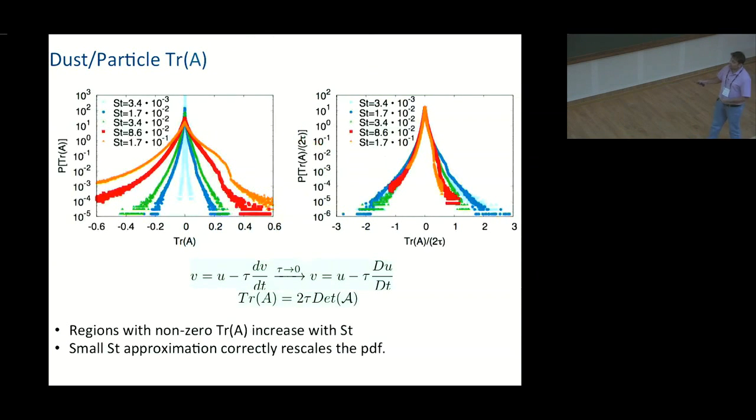You can then ask what happens to the trace of the fluid velocity gradient, and what you find is that the trace of the fluid velocity gradient systematically increases with Stokes number. And when you rescale it in some fashion, all the PDFs fall on top of each other. And again, you can just do a perturbative analysis and show that the trace of the particle velocity gradient is nothing but twice tau determinant of the fluid velocity gradient. So things work very well.